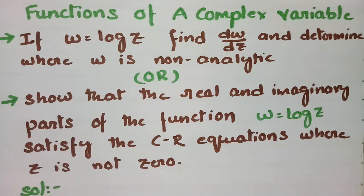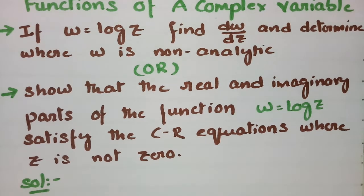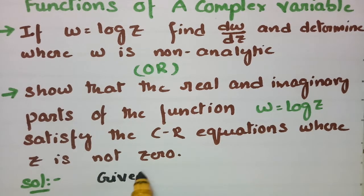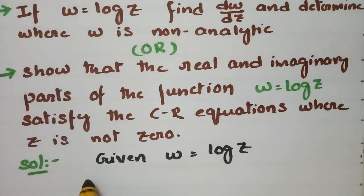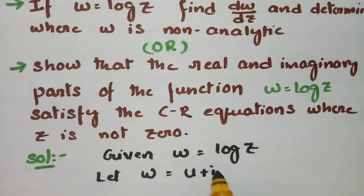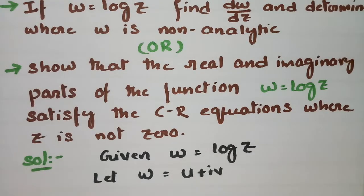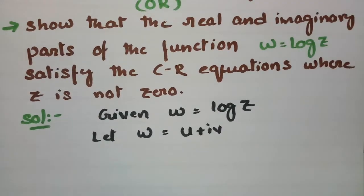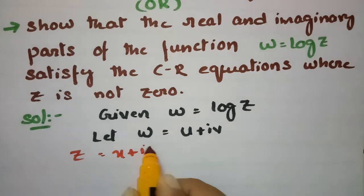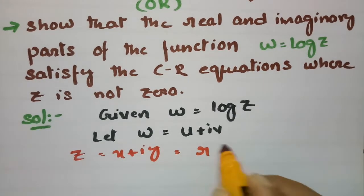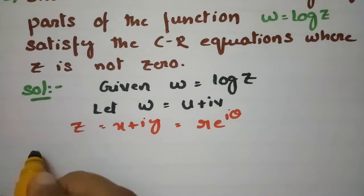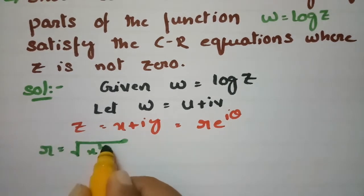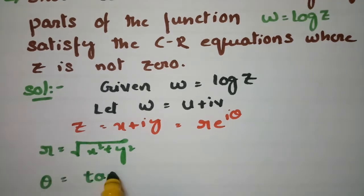We have to consider w is equal to log z. Let w = u + iv. As we know, z = x + iy in Cartesian form, or r·e^(iθ) in polar coordinates. We also have r = √(x² + y²) and θ = tan⁻¹(y/x).